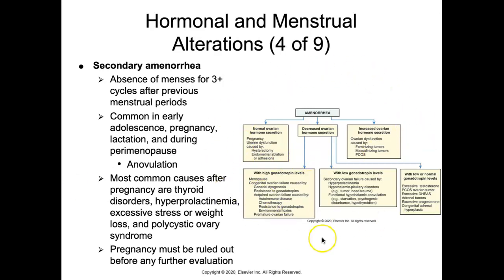The most common cause of secondary amenorrhea is pregnancy, followed by hypothyroidism. Other causes include hyperprolactinemia, excessive stress or weight loss, and polycystic ovary syndrome. Decreased ovarian hormone secretion with high gonadotropin levels may indicate menopause or congenital ovarian failure; with low gonadotropin levels, secondary ovarian failure may be occurring.